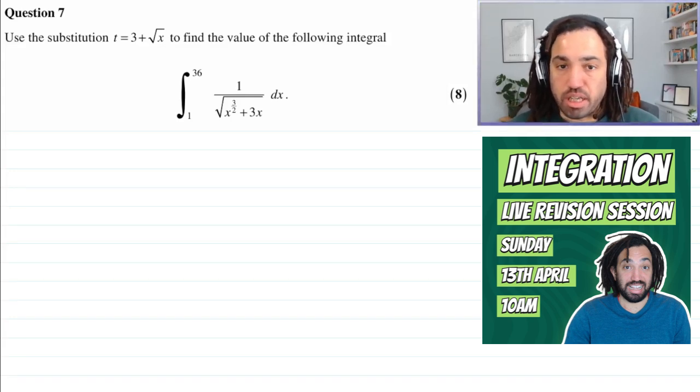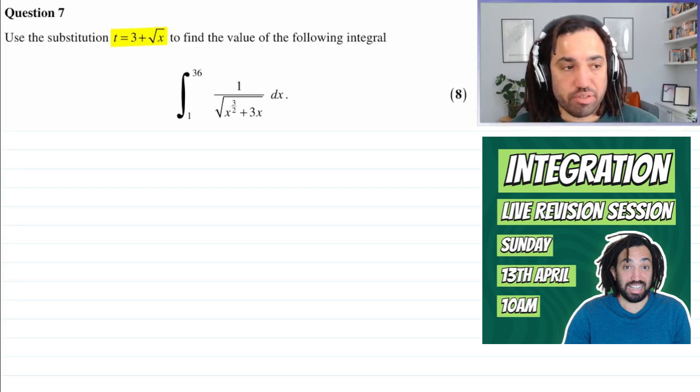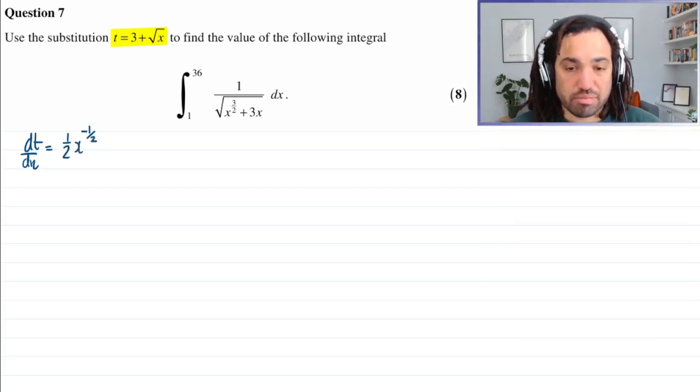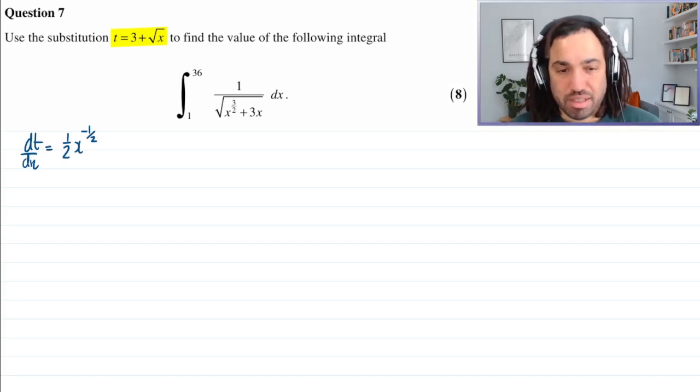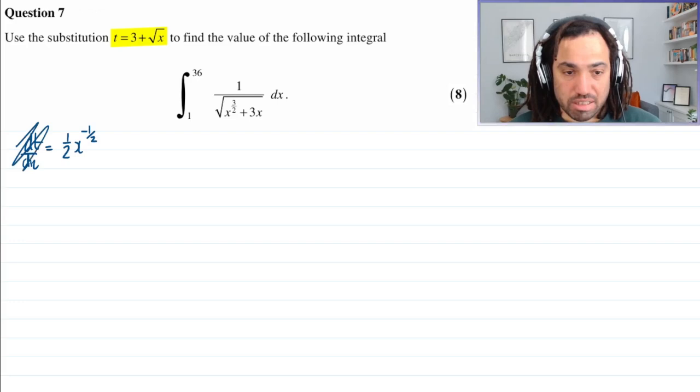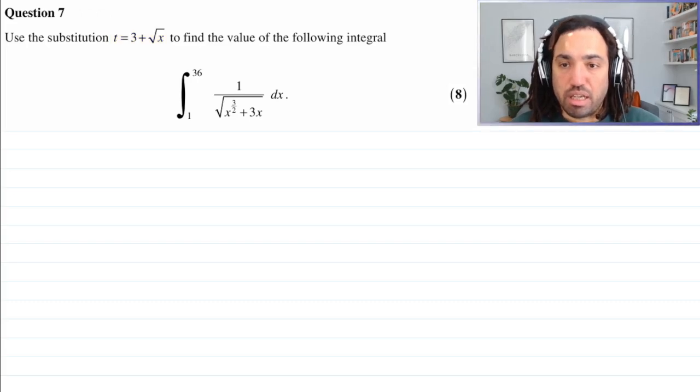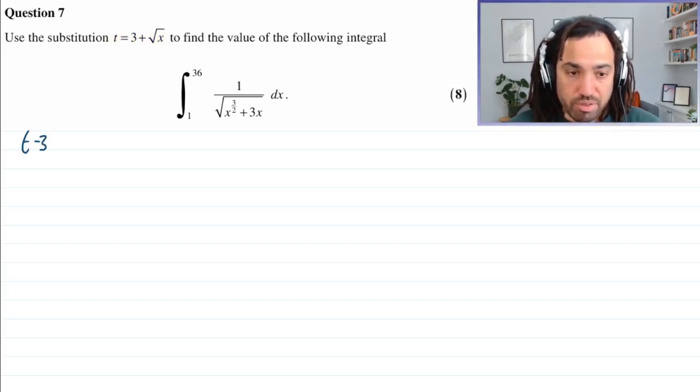Right, so what to do here. Now, the first thing I normally do with integration by substitution is differentiate the substitution to get an expression for dx. Now, what I could do is differentiate this expression with respect to x and that would give me a half x to the minus a half. I don't quite like doing that. What I prefer doing is, because I don't like having the square root there, I like to rewrite it. So I write it as t minus 3 is equal to root x. And then I square both sides to get t minus 3 squared is equal to x.